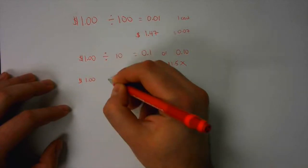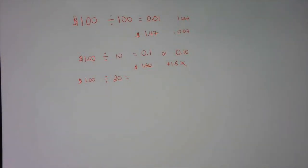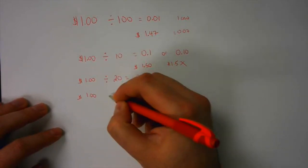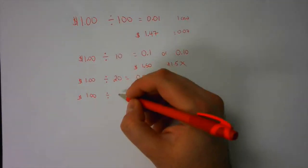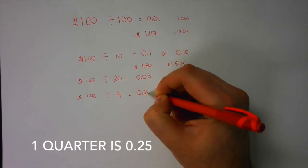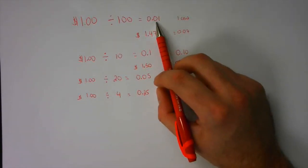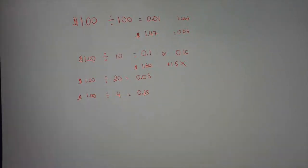Our coins can represent decimals because that's essentially what they are. If I divide a dollar by 20, what's the answer? A nickel — five cents — is 0.05. Another way to divide a dollar evenly is using quarters: there are four quarters in a dollar, so divide by four and you get 0.25. That's the real-life connection, because money is something you deal with every single day.